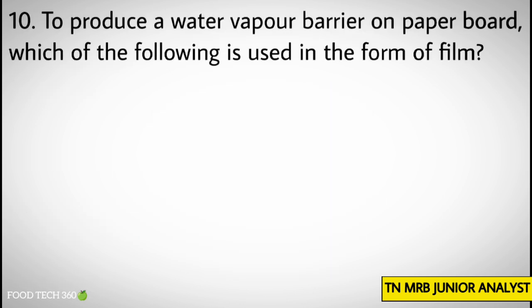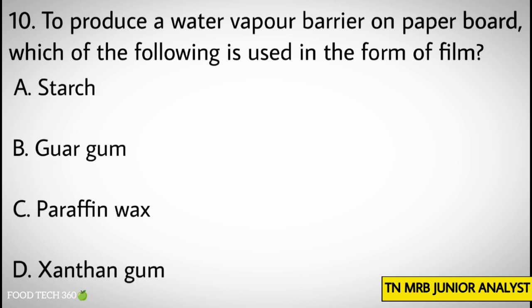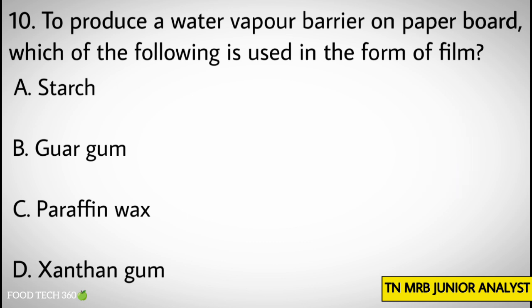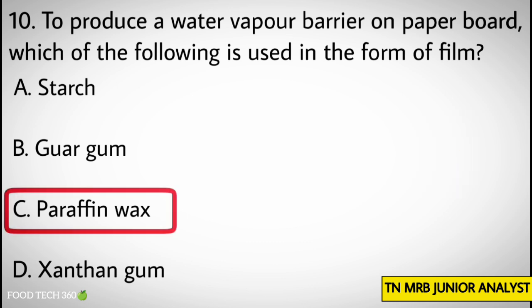Question number 10: To reduce a water vapor barrier on paperboard, which of the following is used in the form of a film? Options: A. Starch, B. Gorgum, C. Paraffin wax, D. Xanthan gum. Correct answer: C. Paraffin wax.